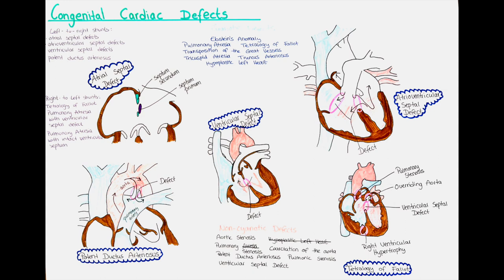In infants with a moderately sized defect, excessive sweating — especially during feeding — and increased fatigue during feeding can be observed. Infants are often not growing properly, and due to pulmonary congestion, respiratory infections occur more frequently. With moderate and large defects, patients usually present with signs of heart failure, cardiomegaly, and a holosystolic murmur that is poorly localized and accompanied by a diastolic rumble.